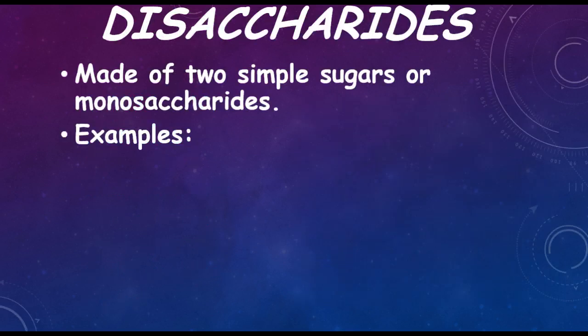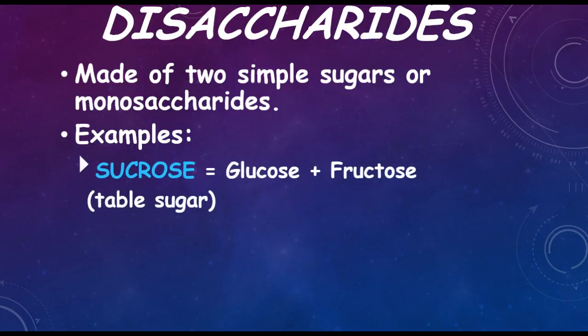Disaccharides are made of two simple sugars, or two monosaccharides. Some examples of disaccharides are sucrose, which is glucose and fructose, which makes table sugar.